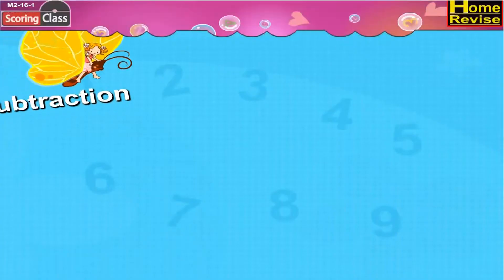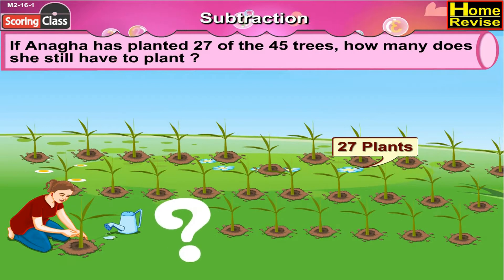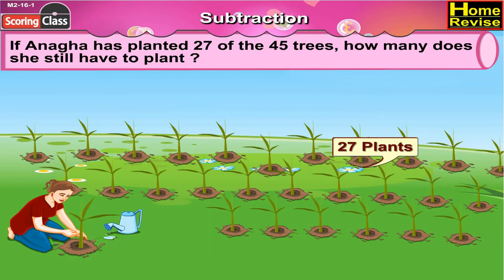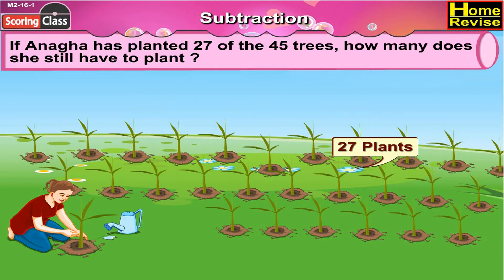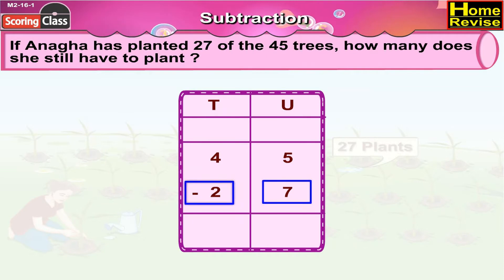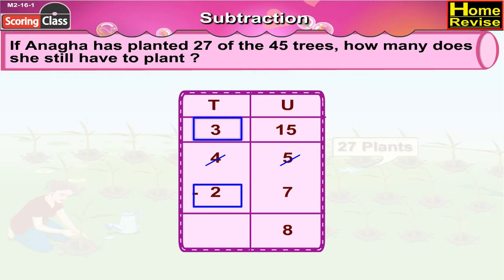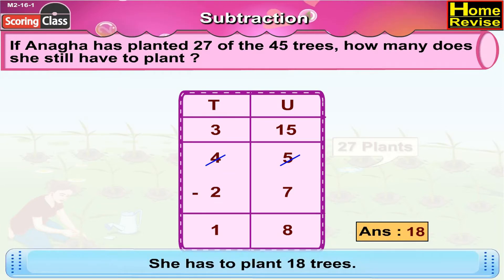Word problem: If Anaga has planted 27 of the 45 trees, how many does she still have to plant? Anaga wants to plant 45 trees and has already planted 27. We need to find 45 minus 27. 45 means 4 tenths 5 units minus 27, which becomes 3 tenths 15 units. 15 minus 7 is 8, and 3 minus 2 is 1, so 45 minus 27 is 18. She has to plant 18 more trees.